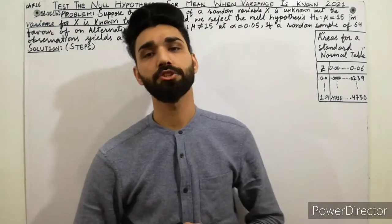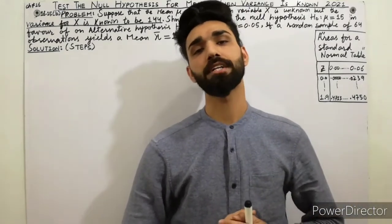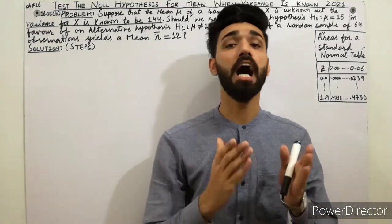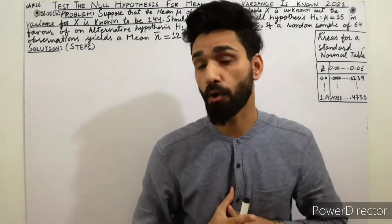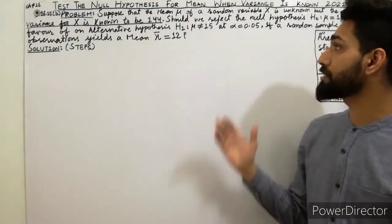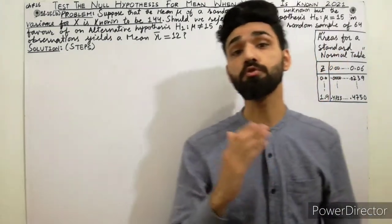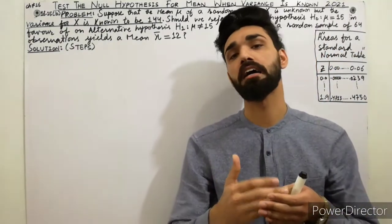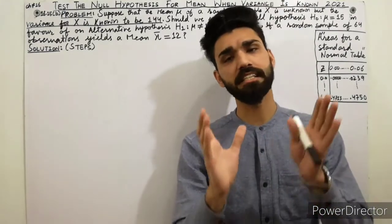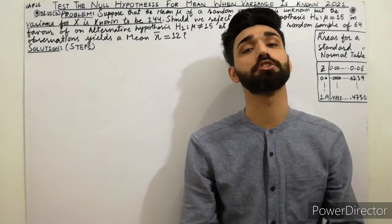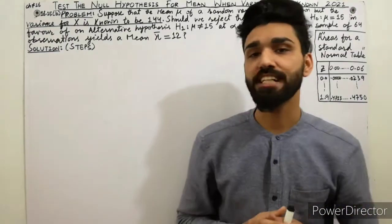Hello friends, welcome to my YouTube channel Asad International Academy. First time in 2021, today I am here to explain how to test the null hypothesis for the mean when variance is already known. In this lecture I will show the problem of hypothesis testing which is the two-tailed test. I have already discussed lectures on the one-tail test and the theory of hypothesis testing — those lectures are available in the description below the video.